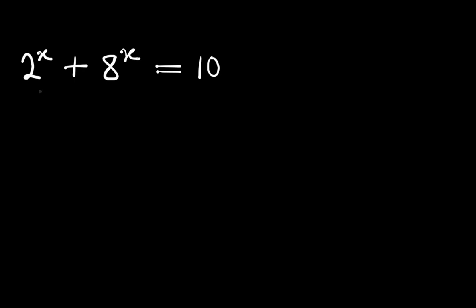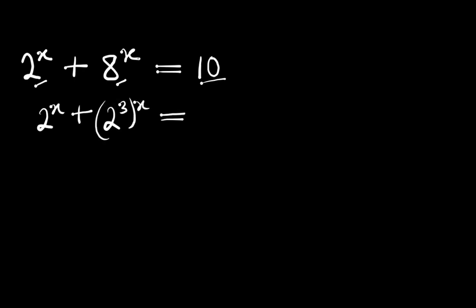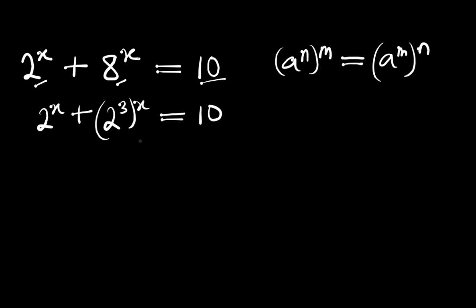Hello, in this video we are going to solve this problem. We have 2^x + 8^x = 10. We can rewrite 8 as 2^3, so we have 2^x + (2^3)^x = 10. Then, using the rule that a^(n·m) = a^(m·n), we can rewrite this as 2^x + 2^(x·3) = 10.